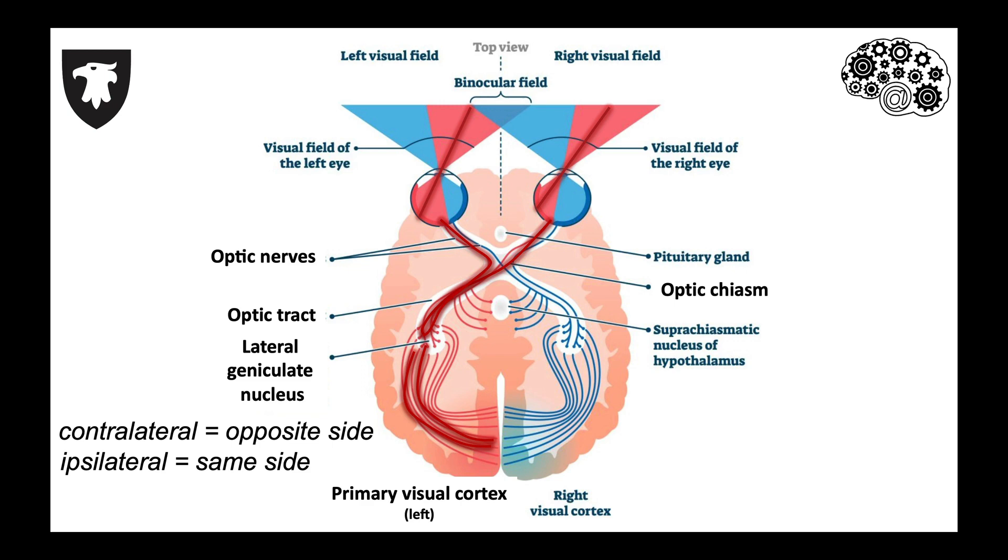Therefore, information from left and right visual space is sent to the primary visual cortex in a way that conserves the properties of the visual scene.